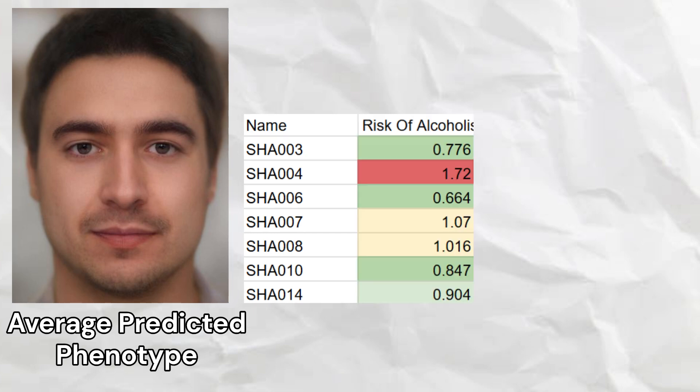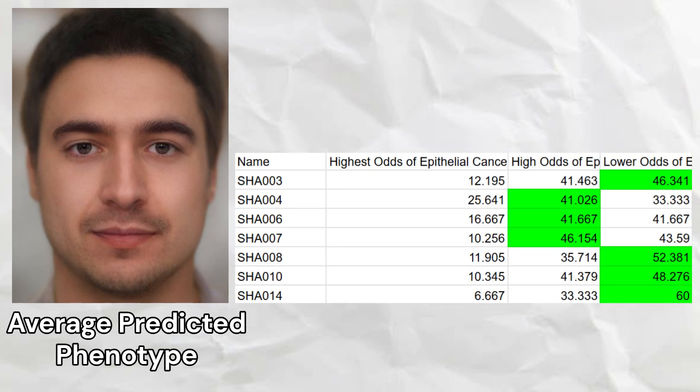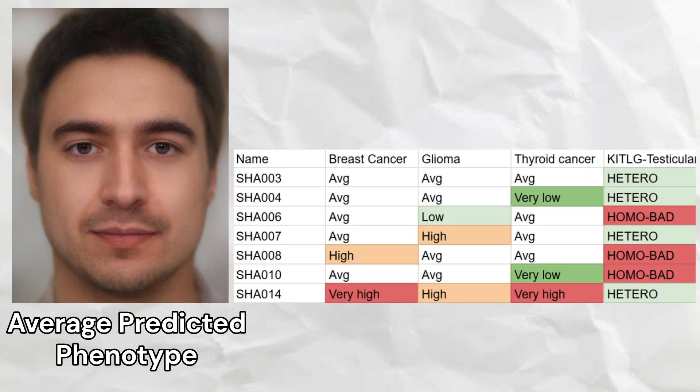Four of the samples had low odds of alcoholism, and one sample had very high odds of alcohol dependence. The Shah Tepe samples had an average predisposition to epithelial cancer on the basis of 8q24 genotypes. They had a high predisposition to breast cancer, average predisposition to glioma or brain cancer, low predisposition to thyroid cancer, and low predisposition to testicular cancer compared to Europeans.